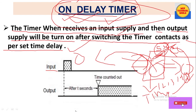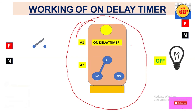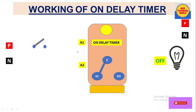Now let's see how this on delay timer works in detail. Here we have the coil supply terminals A1 and A2, and the contacts of the timer — common, NC (normally closed), and NO (normally open). There is also a timer setting knob.